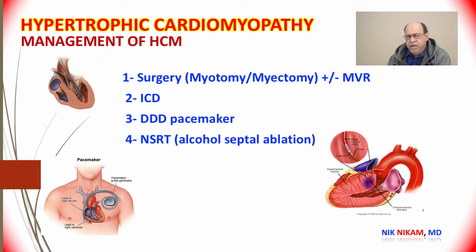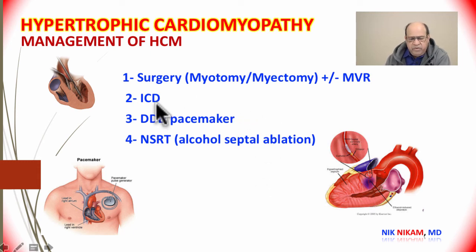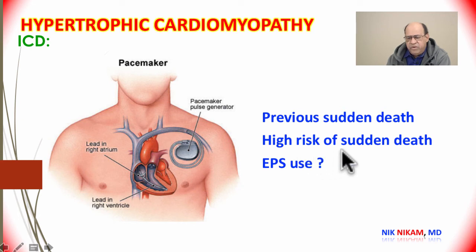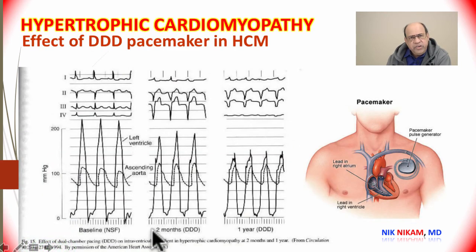The main interventional procedures for reducing left ventricular outflow tract gradient include surgery such as myotomy or myomectomy, placement of a dual-chamber pacemaker, or alcohol injection into the septal branch of the left anterior descending coronary artery. Patients who manifest symptoms of sudden death or serious ventricular arrhythmias may benefit from placement of a cardiac defibrillator, particularly those with a previous history of sudden death or high risk due to family history and significant outflow tract gradient.